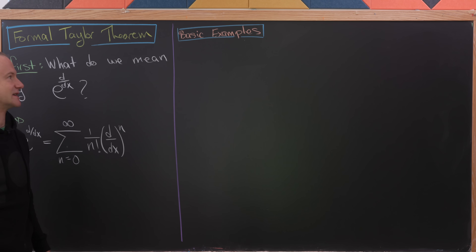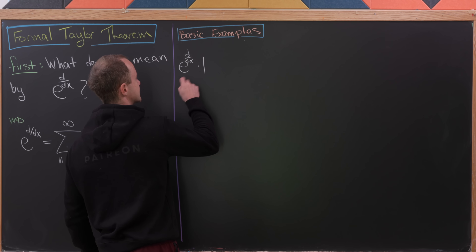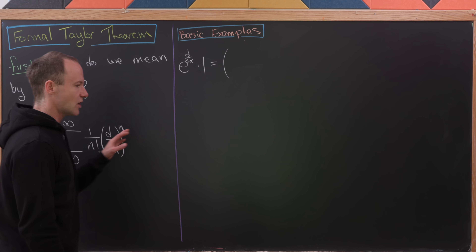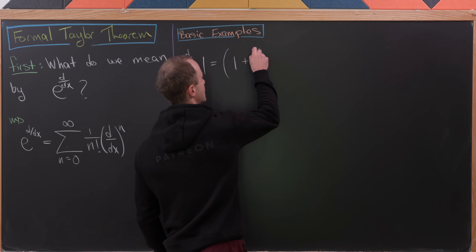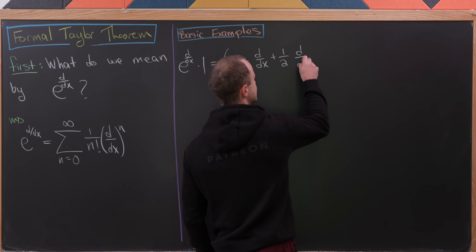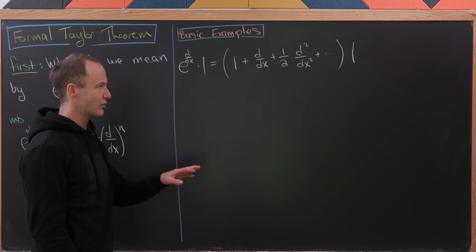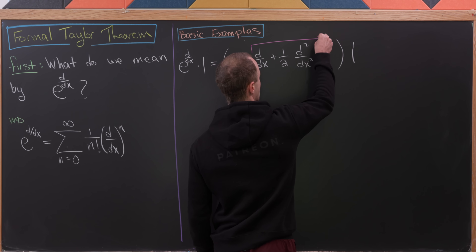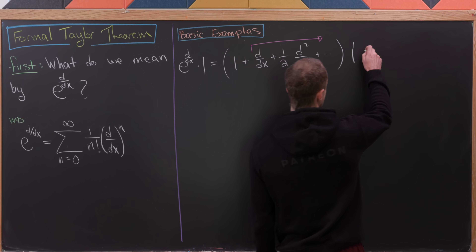Let's do some basic examples, starting with this applied to a constant. Writing out the first couple of terms: the n=0 term is simply 1, the n=1 term is the derivative, and the n=2 term is 1/2 times the second derivative, and then we have higher derivatives. But operating on 1, everything from the derivative forward evaluates to 0 because the derivative of a constant is 0, and we're left with 1 times 1, which is 1.